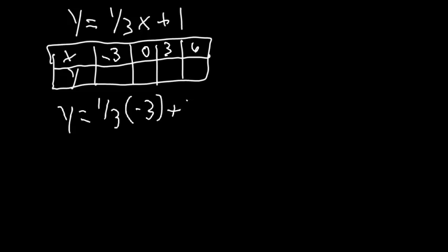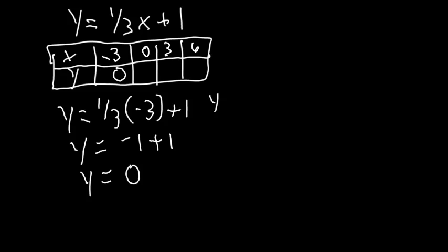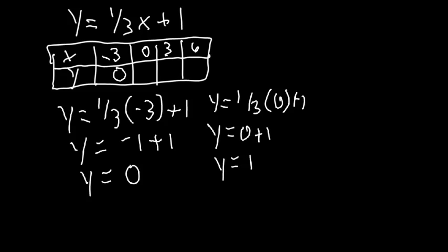One-third of negative three is negative one, so y equals negative 1 plus 1, which equals 0. Then y equals one-third times 0 plus 1. One-third of zero is zero, so that's 0 plus 1, meaning y equals 1.